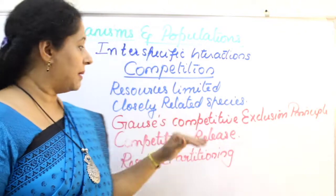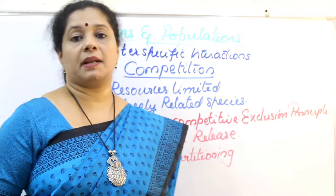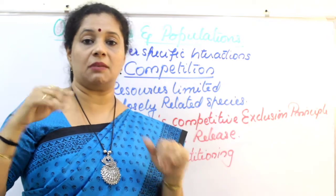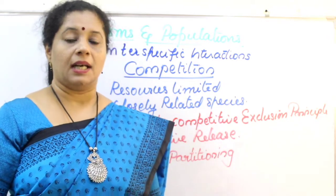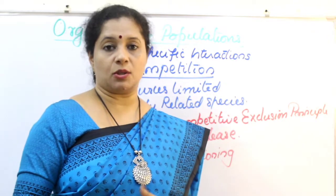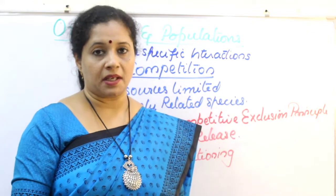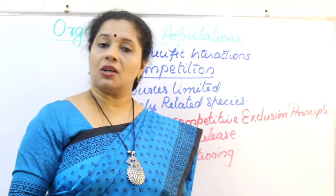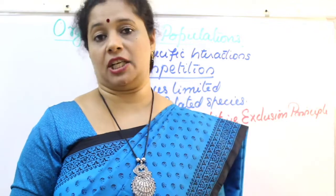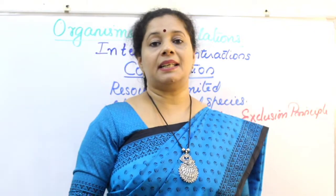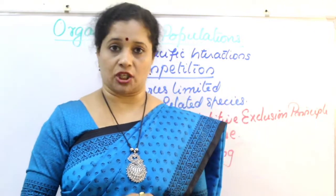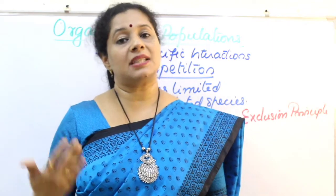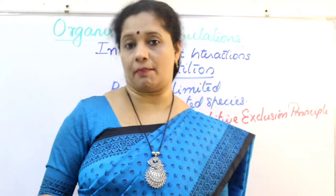Coming back to Gause's competitive exclusion principle — in the presence of a competitively superior species, the other will eventually be eliminated. This can happen in certain situations like the Abingdon tortoise example. But we cannot generalize this rule, because it is not happening every time in nature. Over a period of time, all organisms tend to evolve to overcome competition.